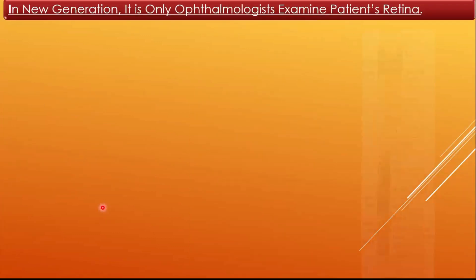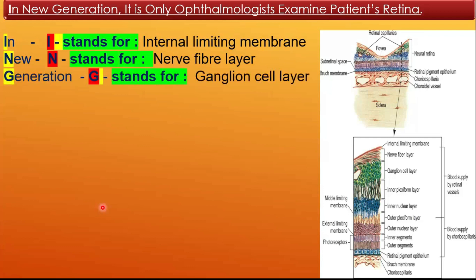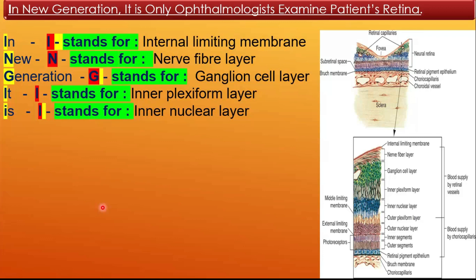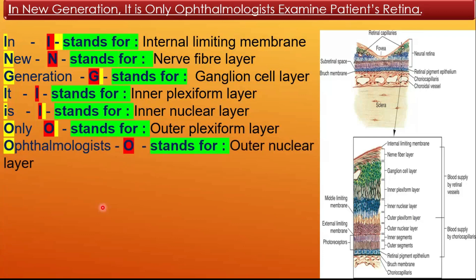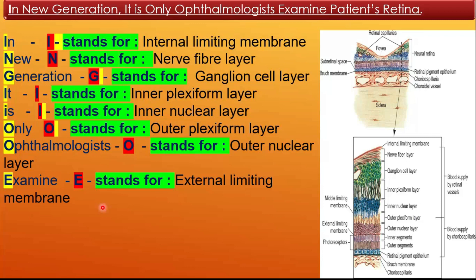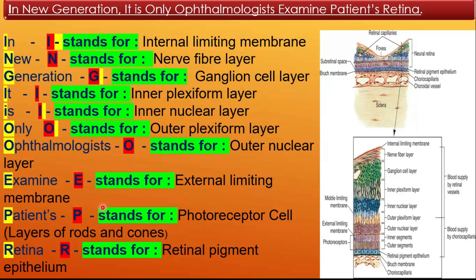I stands for inner limiting membrane; N stands for nerve fiber layer; G stands for ganglion cell layer; I stands for inner plexiform layer; the next I stands for inner nuclear layer; O stands for outer plexiform layer; the next O stands for outer nuclear layer; E stands for external limiting membrane; P stands for photoreceptor layers of the retina, that is the layers of rods and cones; and R stands for retinal pigment epithelium.